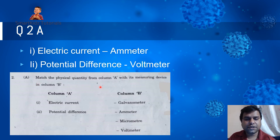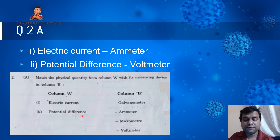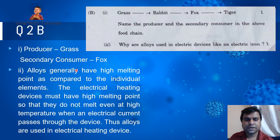Question 2A: match the physical quantity from Column A with the measuring device in Column B. Electric current is measured using an ammeter, and potential difference is measured using a voltmeter. Those are the correct choices.